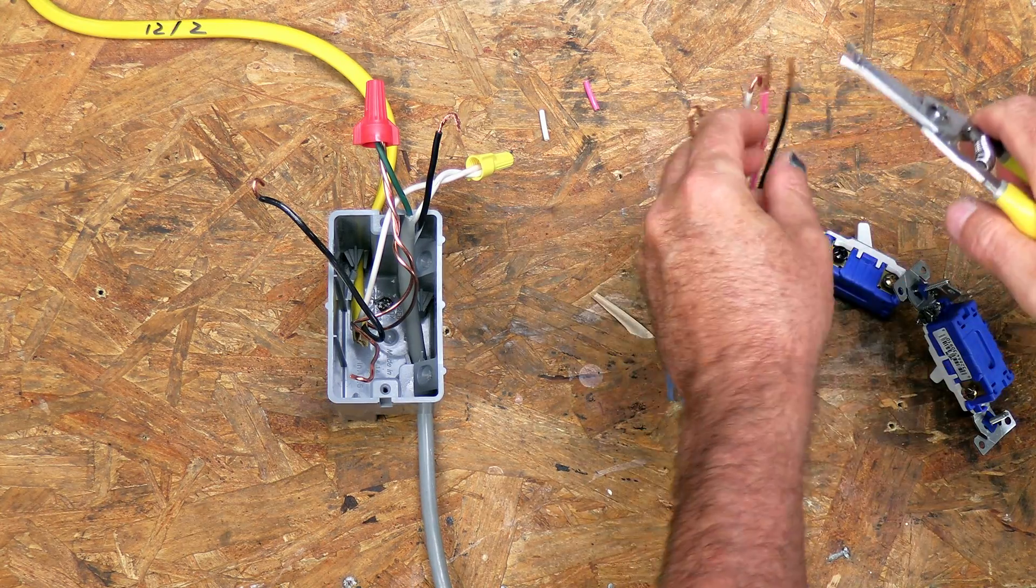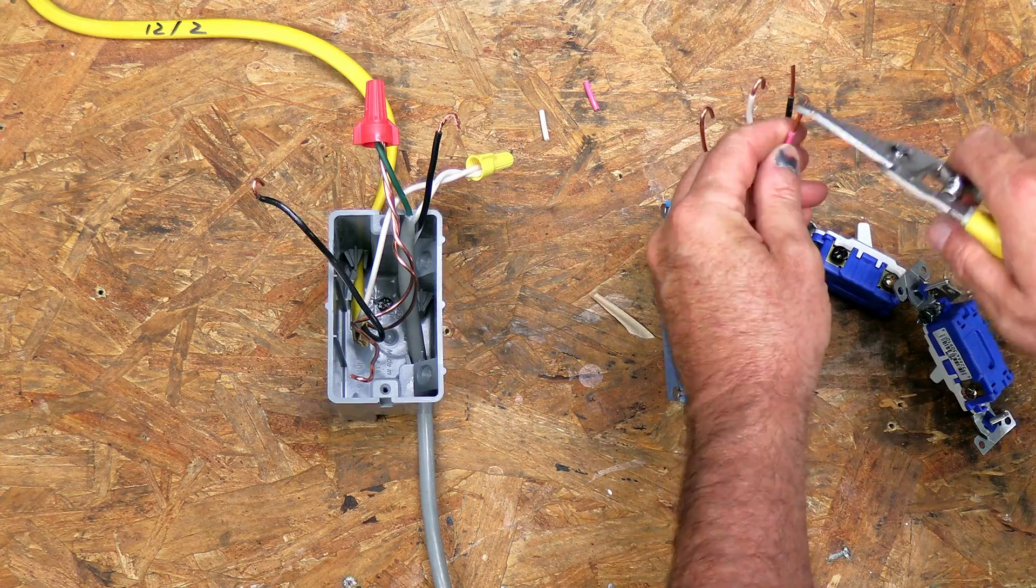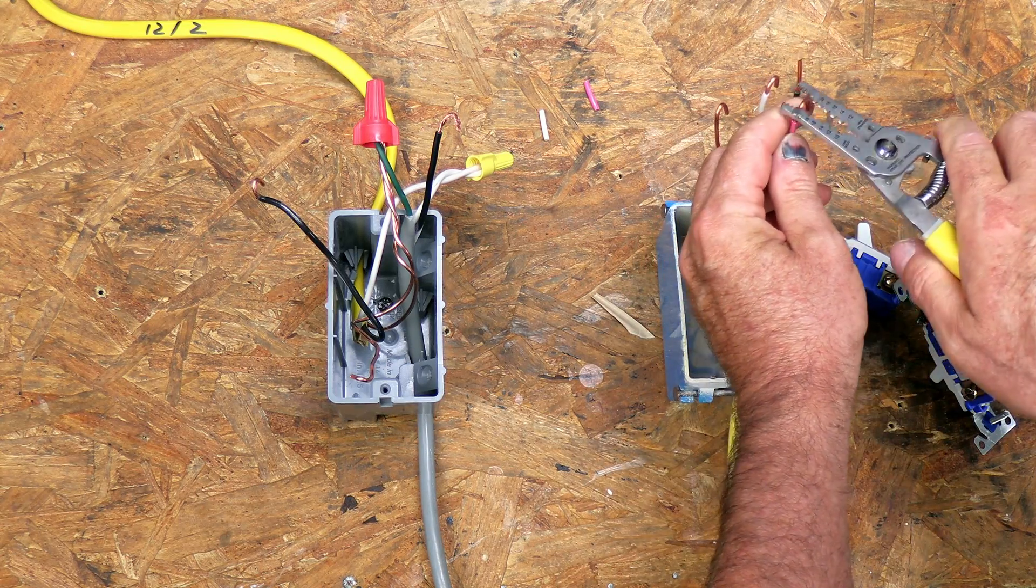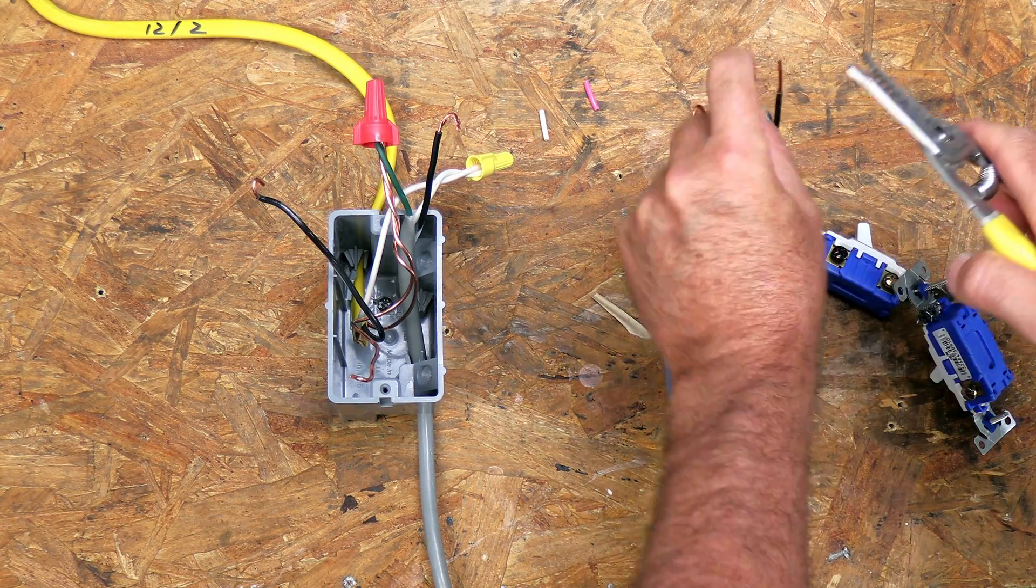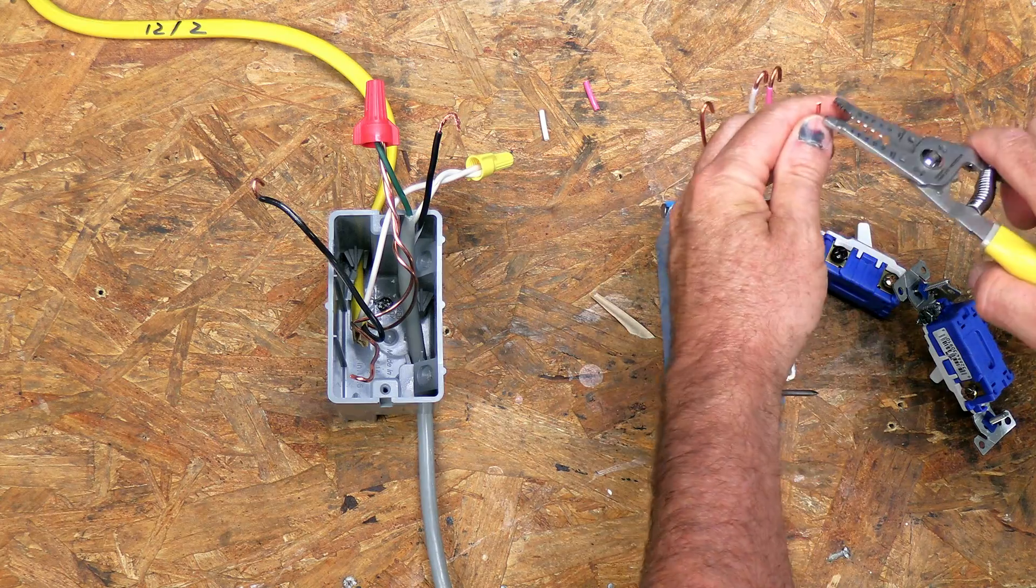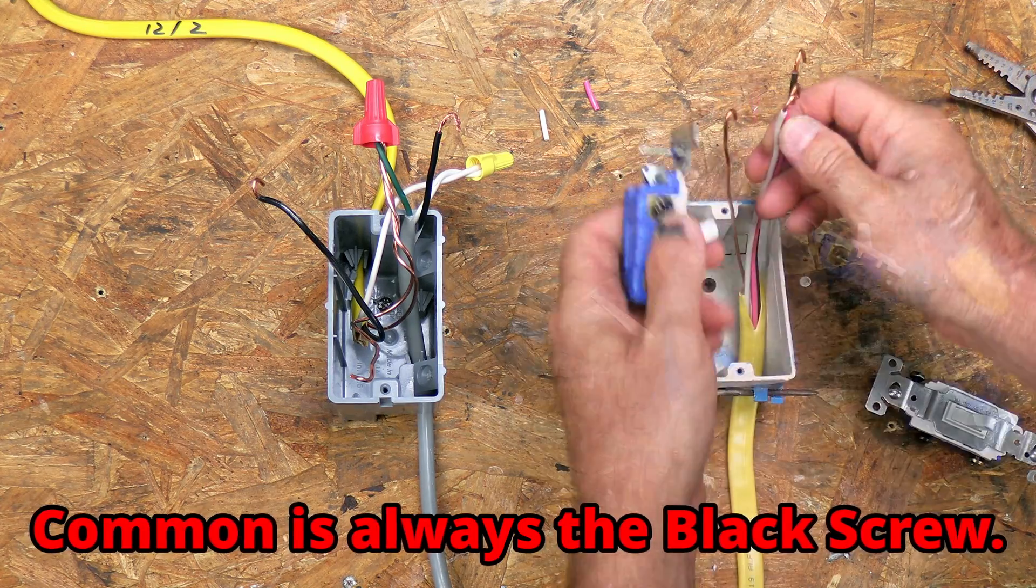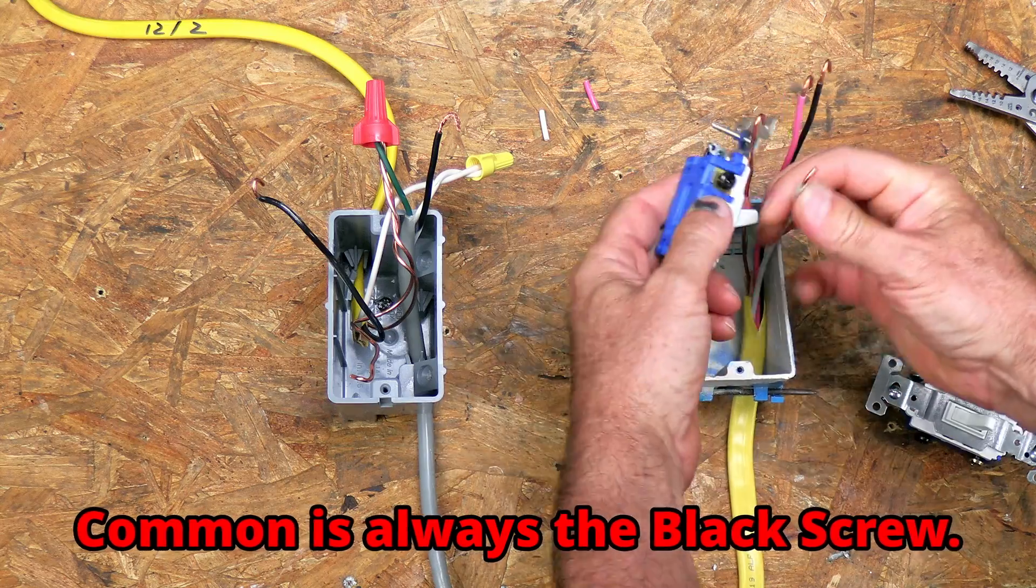So I will peel these back, go ahead and bend my loops in them. Now I'm going to use the white wire as my common wire and the red and the black wires as my travelers. So I'm putting the white on the common.